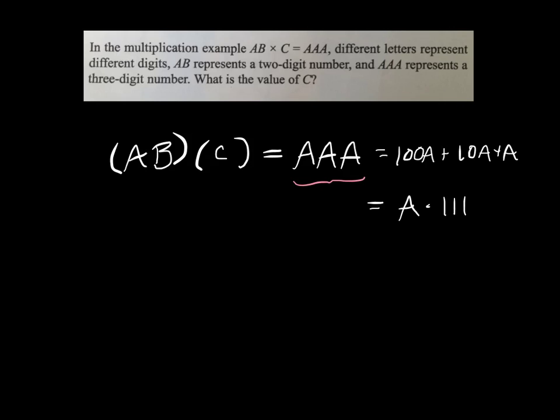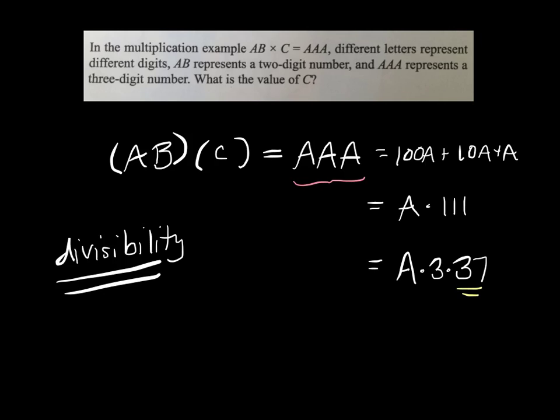And with all these digit problems, we're seeing that divisibility is sort of a really good thing to look for. And so if I take this and factor it further, I'm going to get A times 3 times 37. 37 is prime. This thing is prime.